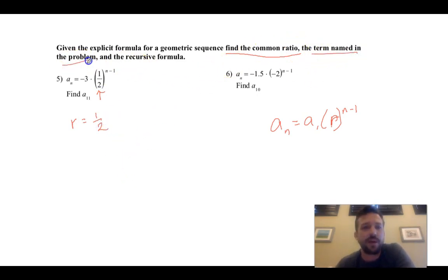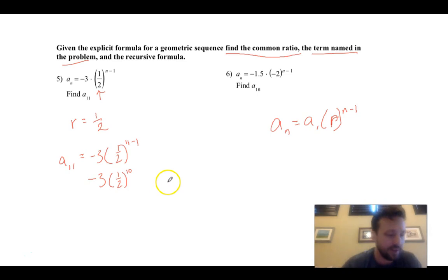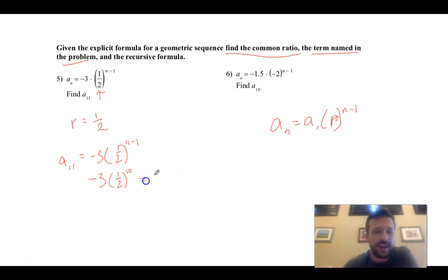Find the term named in the problem — we want a to the 11th. So a sub 11 equals negative 3 times one half raised to the (11 minus 1), which is the 10th power. I'm just going to type that into the calculator: negative 3 times 1 half raised to the 10th power. And that gives us an answer of negative 3 over 1024. There's the 11th term.